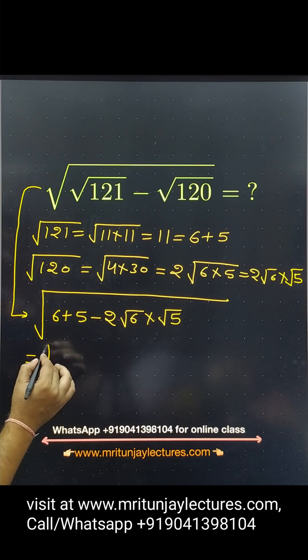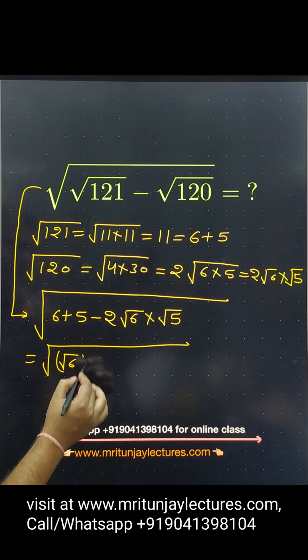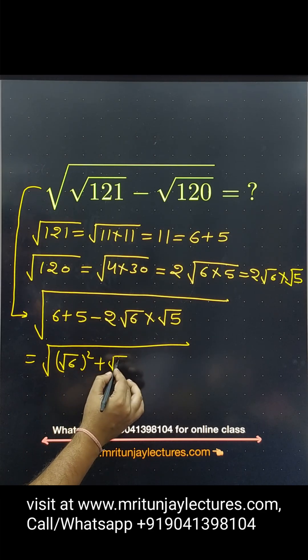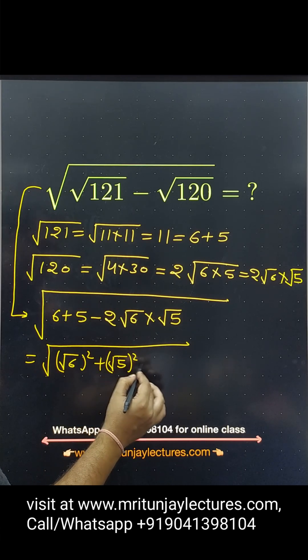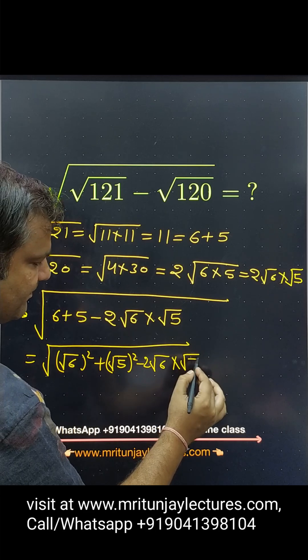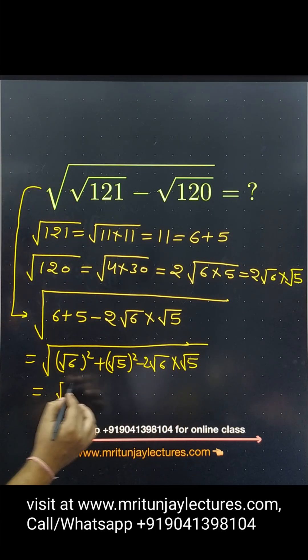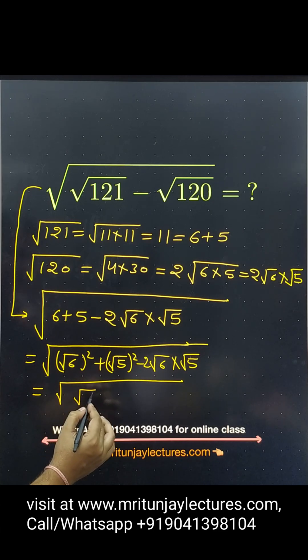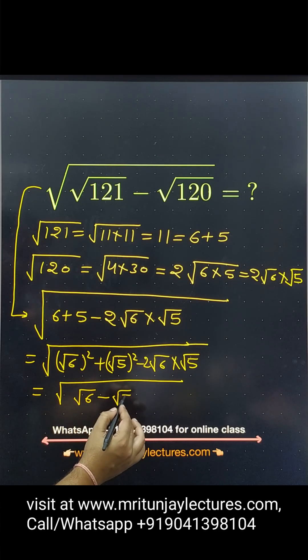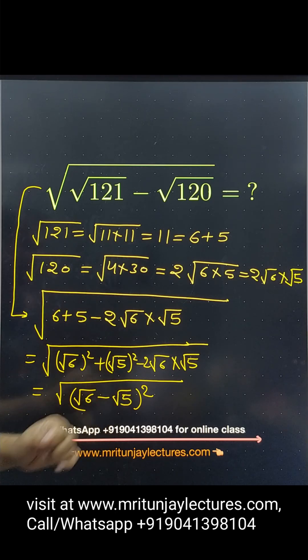After that, this one root 6 to the whole square plus root 5 to the whole square minus root 6 into root 5. Okay, so that's root 6 to the whole square minus root 5 to the whole square. Root 6 minus root 5 to the whole square.